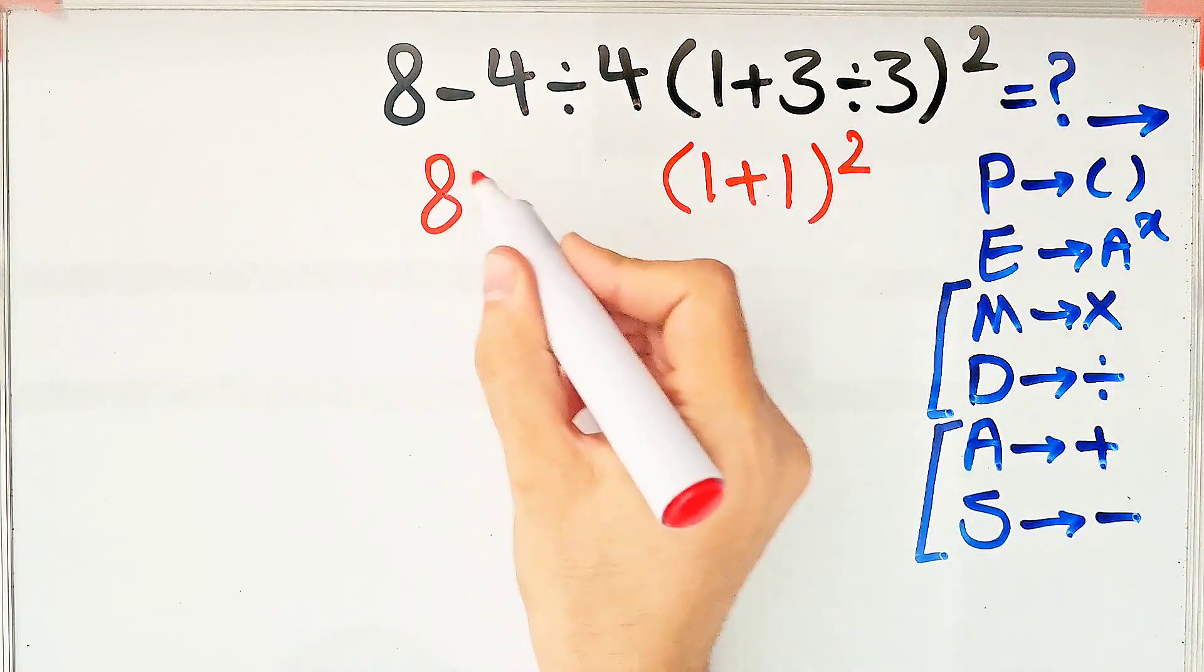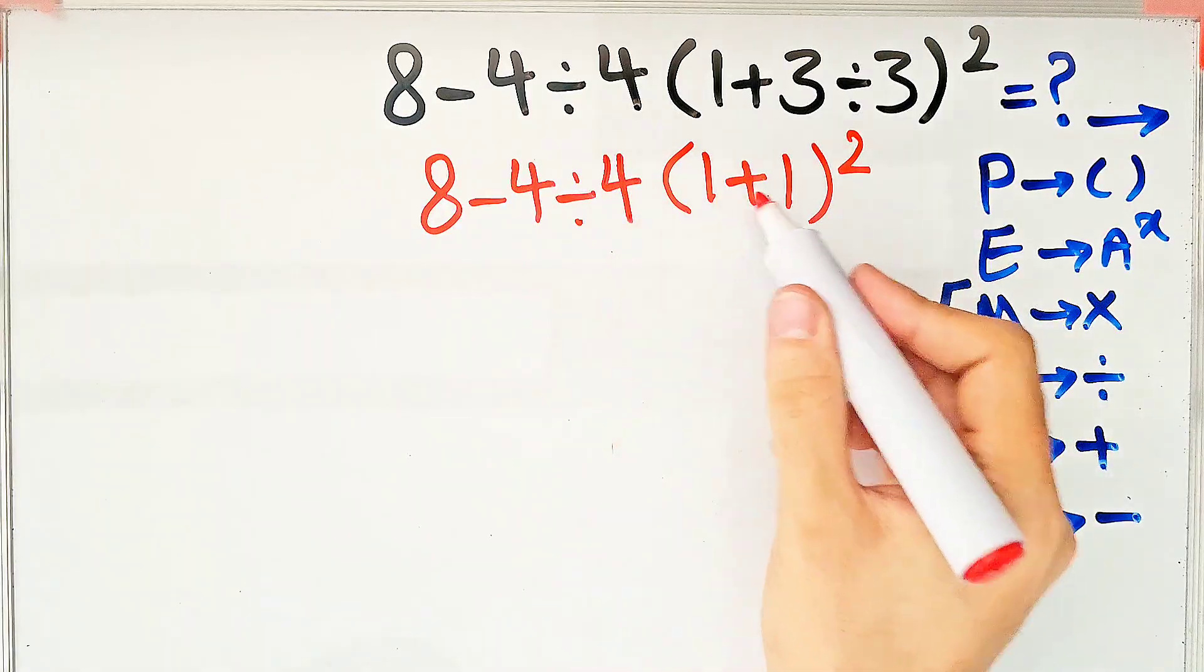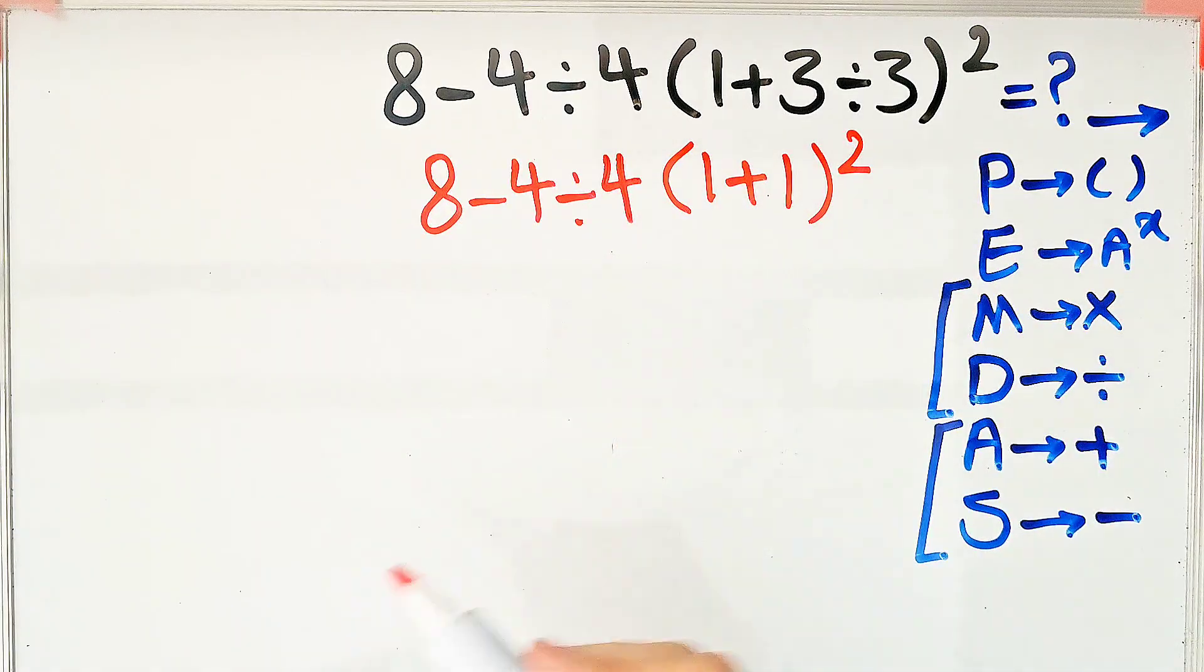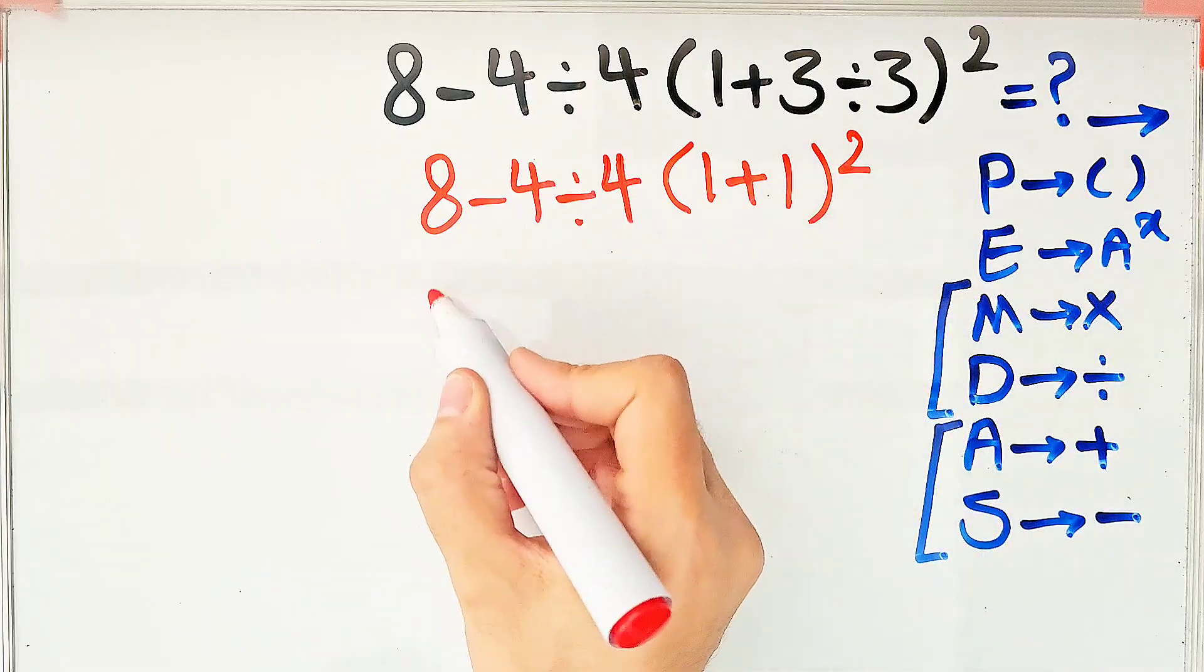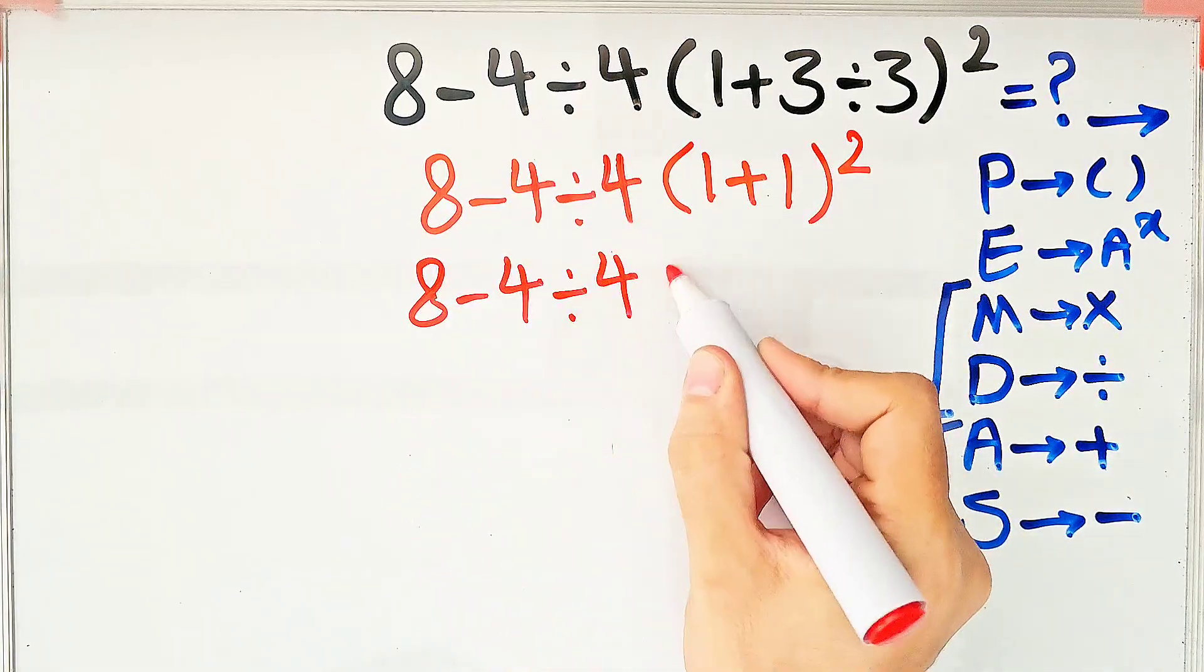Then to the power of 2. And the question is 8 minus 4 divided by 4, then times 1 plus 1 to the power of 2. Again, we simplify the parentheses. We have 8 minus 4 divided by 4, then times 2 to the power of 2.